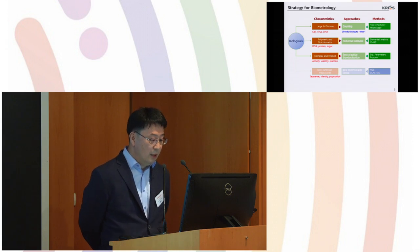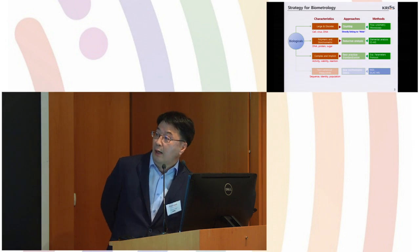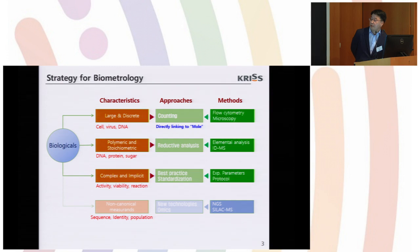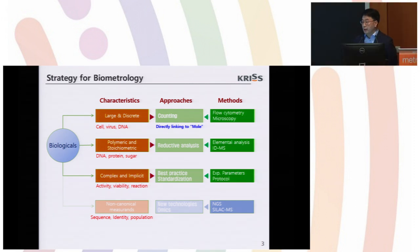And nowadays we have another new category. I termed it non-canonical measurements such as sequence, identity, and population properties. I think we need some technological innovation to measure this category.